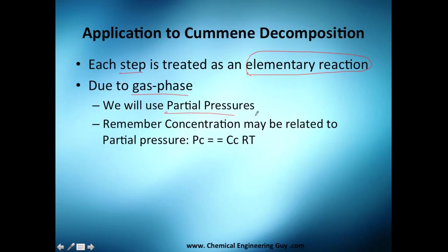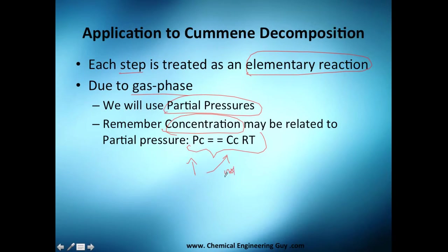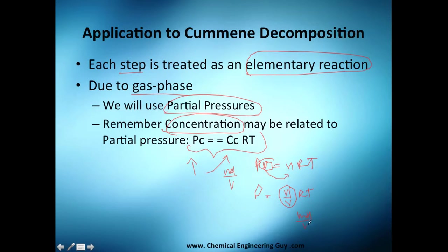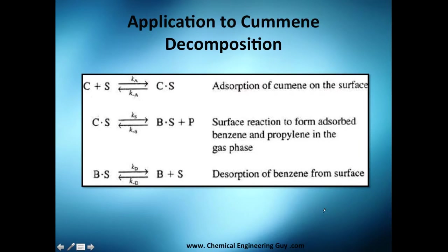Since it is gas phase, we will use partial pressures in general. Remember, you can always relate partial pressure with concentration using the ideal gas law: PV = nRT. If you rearrange, n/V is molar concentration — moles per volume, or molarity if you want to call it.